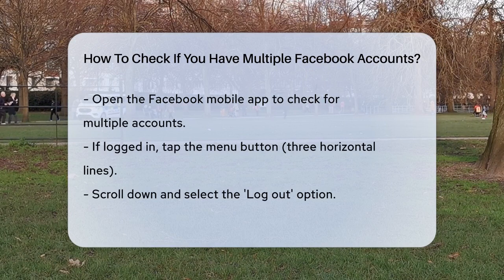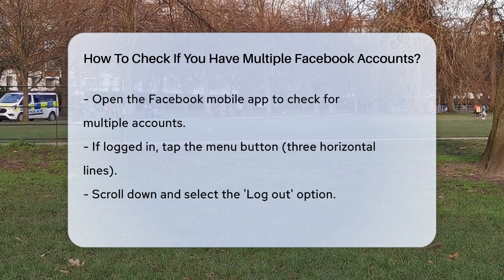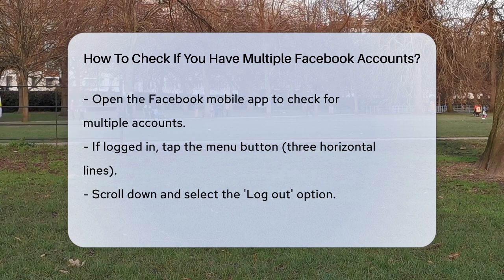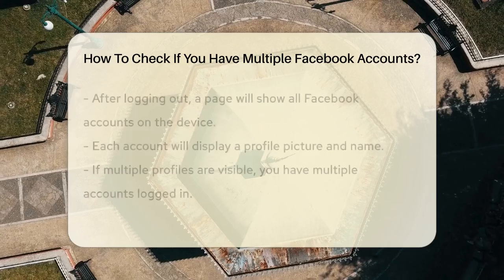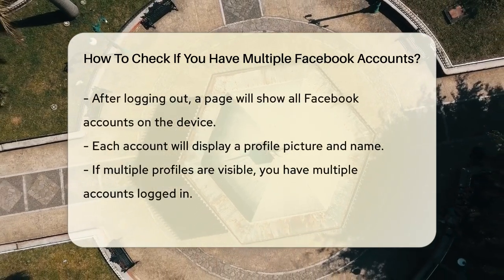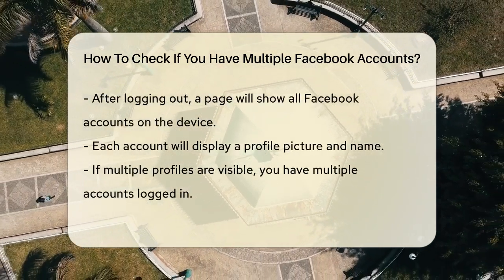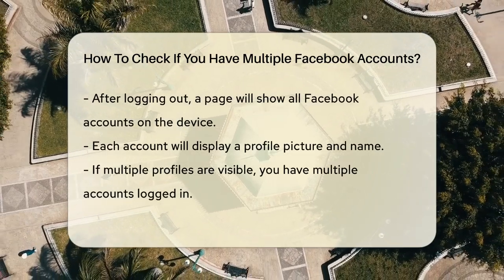First, open the Facebook mobile application on your device. If you're logged in, you'll see your profile. To check for other accounts, you need to log out of the current one. Tap on the menu button, usually represented by three horizontal lines, and scroll down until you see the logout option.